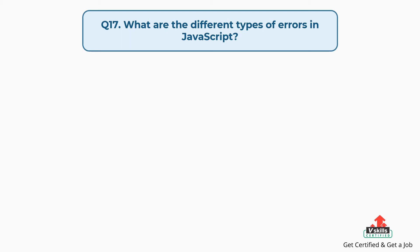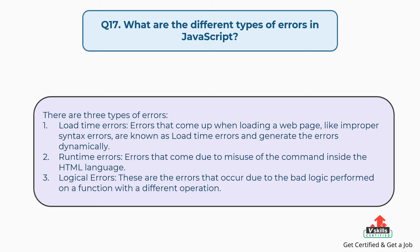Question number seventeen: what are the different types of errors in JavaScript? There are three types of errors. First, load time errors — errors that come up when loading a web page, like improper syntax errors, are known as load time errors and generate the errors dynamically. Second, run time errors — errors that come due to misuse of the command inside the HTML language. Third, logical errors — these are errors that occur due to bad logic performed on a function with a different operation.